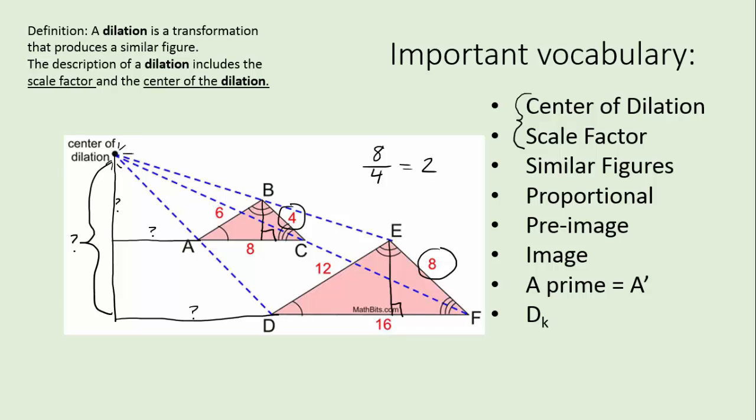Now the areas would be different and you know how to figure that out because we've done that before. The dilated figure is similar. So it makes similar figures. The sides are all proportional. We have terms called pre-image and image. The pre-image is the original figure and the image is the dilated figure.